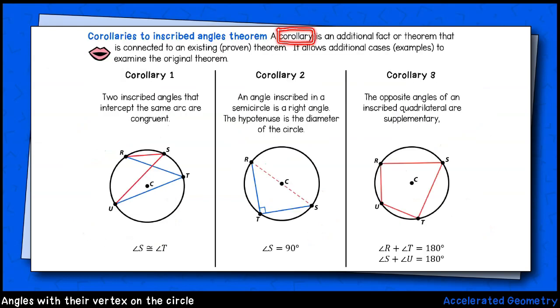Let's look at some of the other implications of the inscribed angles theorem. A corollary is an additional fact or theorem that is logically connected to an existing theorem. In other words, these are the additional facts that are true because of the inscribed angles theorem. First, on the left, we have two different inscribed angles, one in blue, the other in red. They both intercept the same arc. That means that the blue and red angles are congruent.